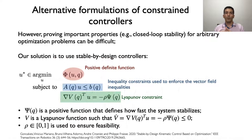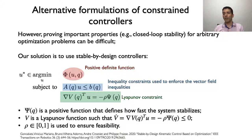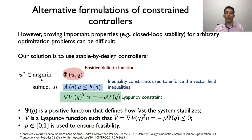There are different formulations for constraint controllers, and different optimization problems can be used to induce different behaviors. One formulation may be used to generate sparse control inputs, in which just the minimum number of joints will be actuated at a given time — the decision regarding which joints to actuate is made entirely by the controller. However, proving important properties such as closed-loop stability for arbitrary optimization problems can be very difficult. A very promising solution is to use stable-by-design constraint controllers, where the objective function quantifies how adequate a given control input is, the inequality constraints enforce vector field inequalities, and a Lyapunov constraint ensures that the closed-loop system is stable.